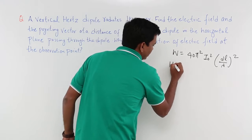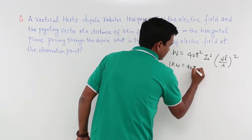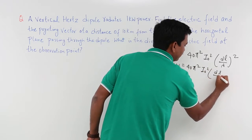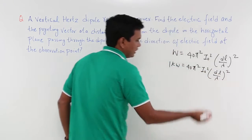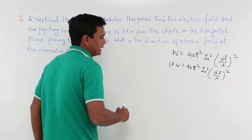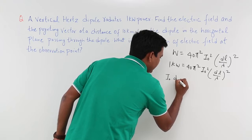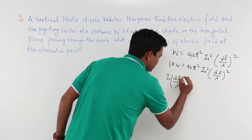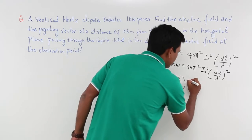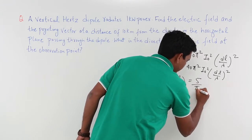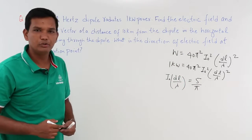This will be 1 kilowatt equal to 40π² I₀² (DL/λ)². If I simplify this I will get I₀DL/λ. This quantity I will try to find it out which comes out to be if you solve this you will get 5/π. We will use this quantity.